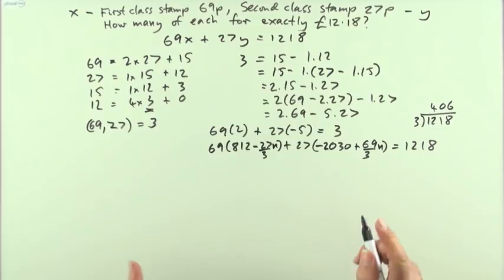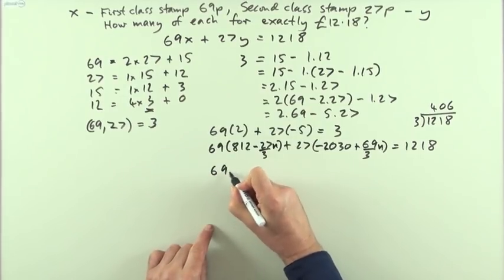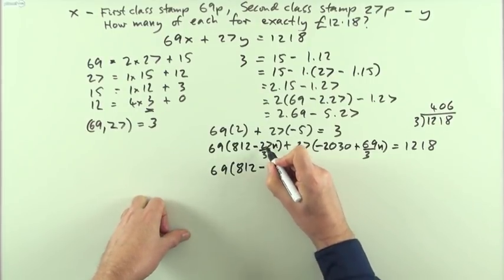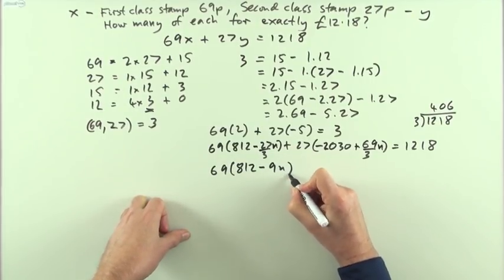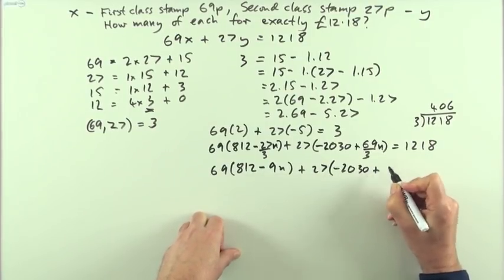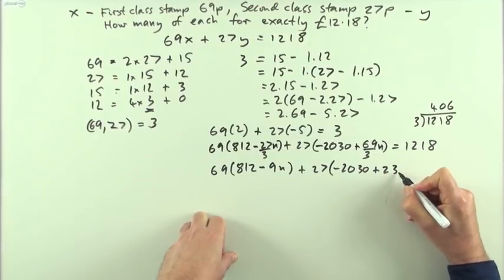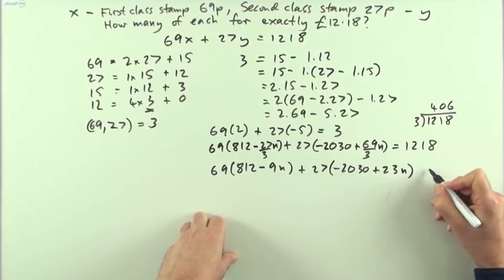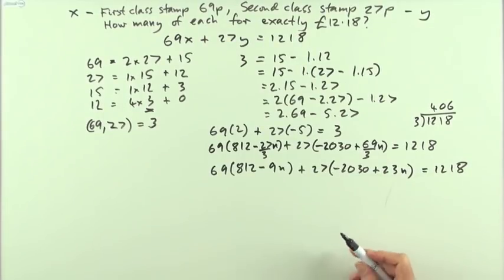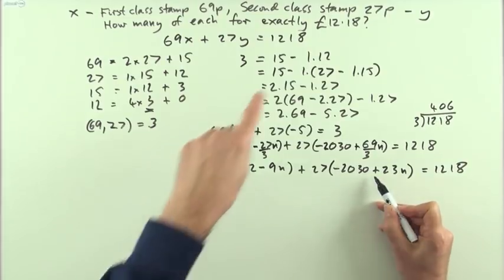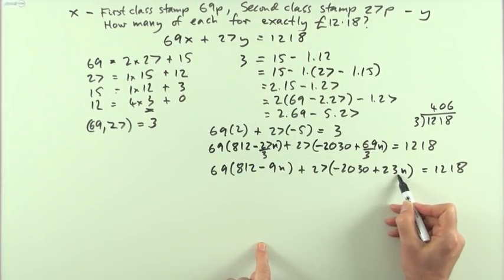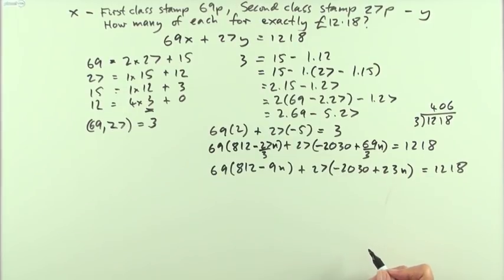So what I've actually got is 69 times 812 minus 9 lots of n, and 27 times negative 2030 plus 23 lots of n equals 1218, and then it's just a case of choosing the appropriate amount of n. Well, obviously, I need the number of second class stamps to go positive. So how many 23s would it take to overwhelm 2030?